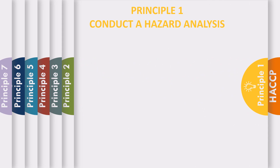Principle 1: Conduct a Hazard Analysis. The purpose of a hazard analysis is to develop a list of hazards which are likely to cause injury or illness if they are not controlled. For example, a potential hazard may be growth of bacteria in a carton of raw chickens when delivered to the loading dock.